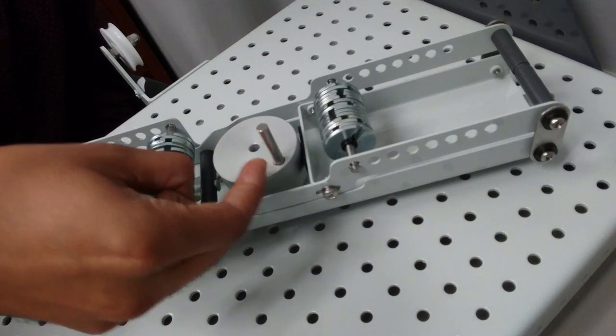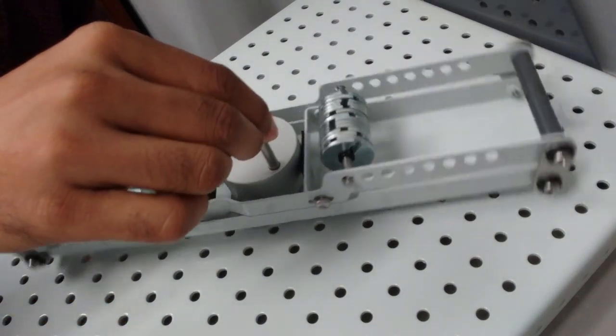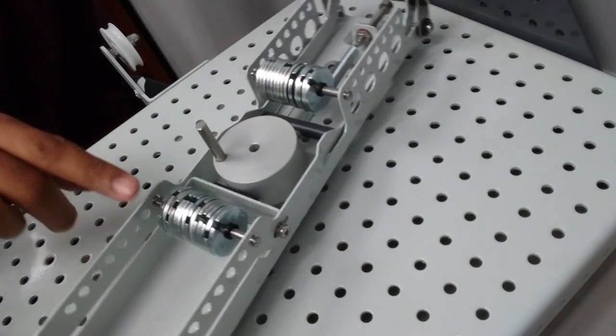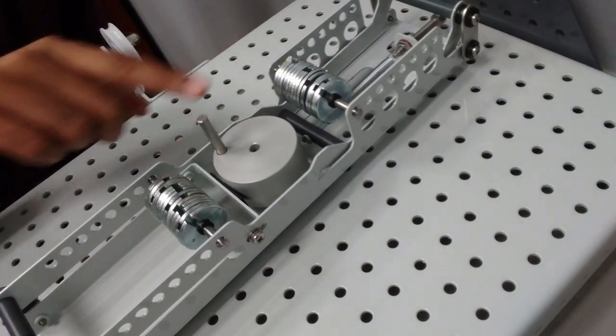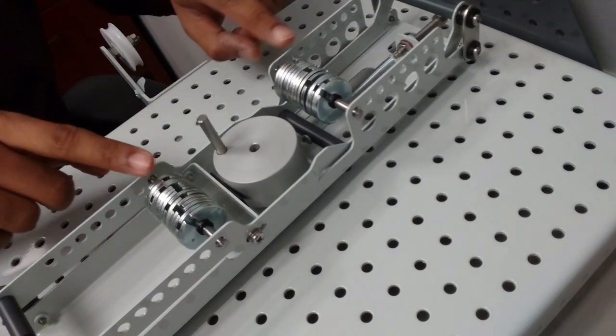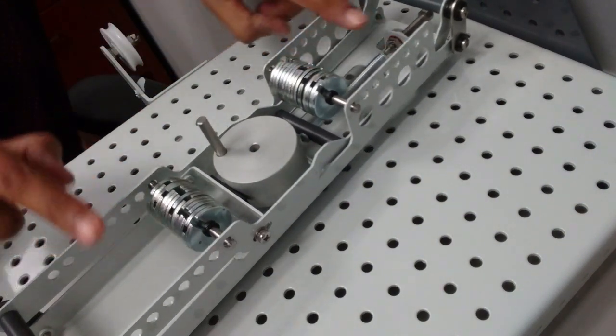I will use this handle to rotate the body, and these are the adjustable weights that I can move to different holes, in different places.